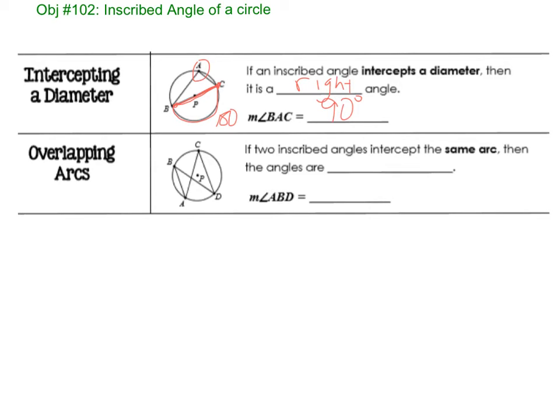Two inscribed angles intercept the same arc. Then the angles are equal. So look at this. They're asking about angle ABD. So ABD is this angle, right? What is the arc that goes with that angle? AD. So let's say the arc was 50. That means this angle in here is 25.